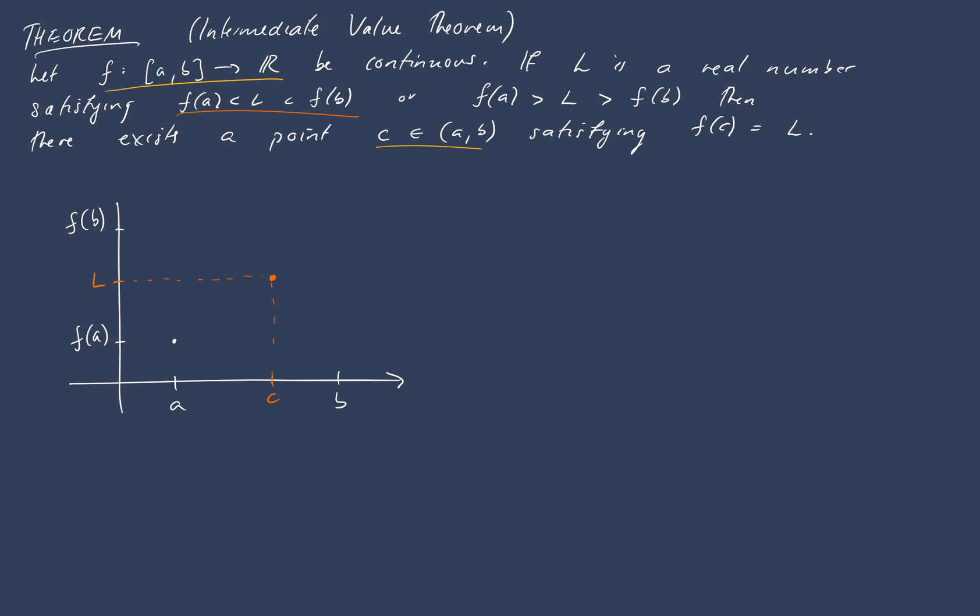Such that our function is equal to L at that point. So if we were to draw our function, we know it goes through these two points here because it's continuous on the closed interval. Intermediate Value Theorem says we can find this point c, such that we go through there as well.